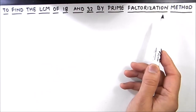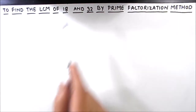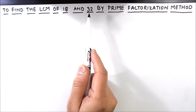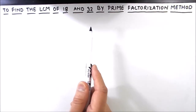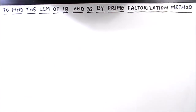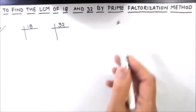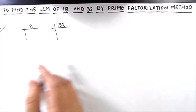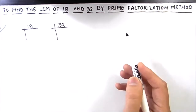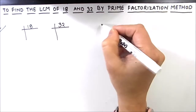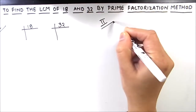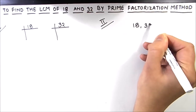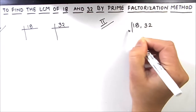We will be using the prime factorization method. In this method, we divide the numbers by prime numbers and find the factors. By taking the product of the factors we can find the LCM. The prime factorization of the two numbers can be done separately, or we can use a single ladder. In this video we will be doing both methods.